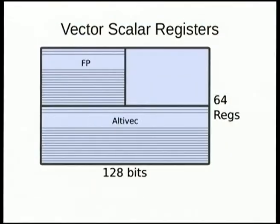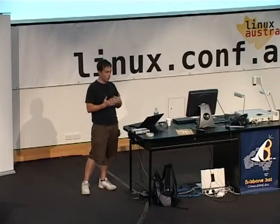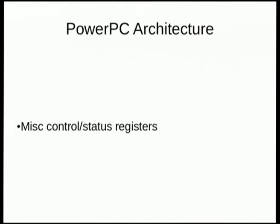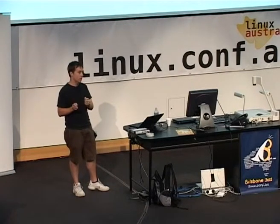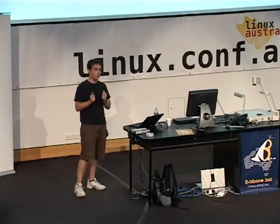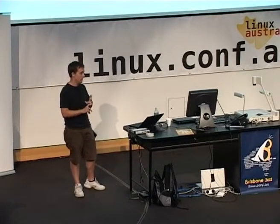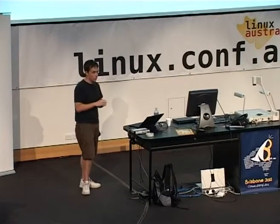It turns out that VSX overlaps with the floating point and Altivec registers, so there's no additional state on top of FP and Altivec. We also have miscellaneous control and status registers — for example, whether dividing two floating point numbers results in zero, NaN, or infinity. From an operating systems perspective, we can turn off individual parts of the CPU. If a user space program tries to run floating point instructions, it will trap into the kernel, and the kernel can decide whether to restore and allow it to run. We have that for FP, Altivec, and VSX.